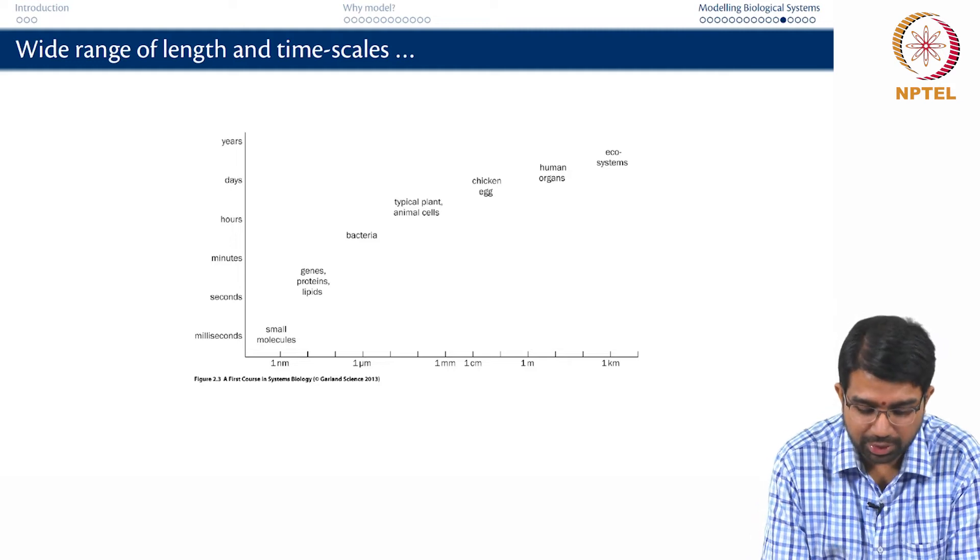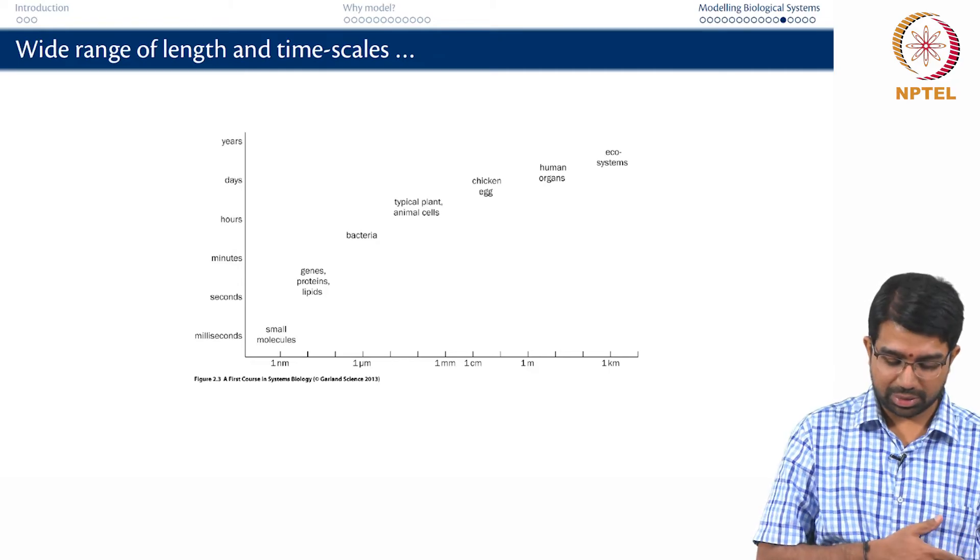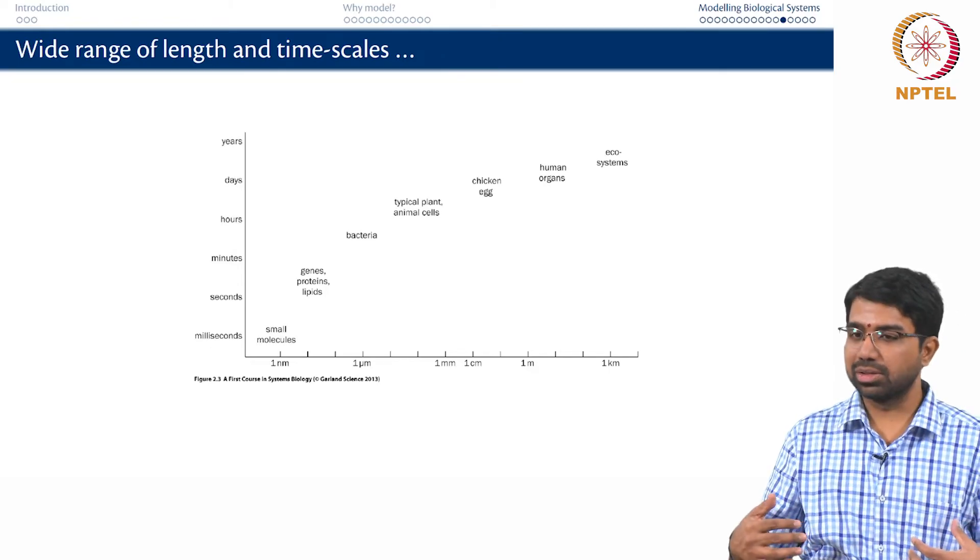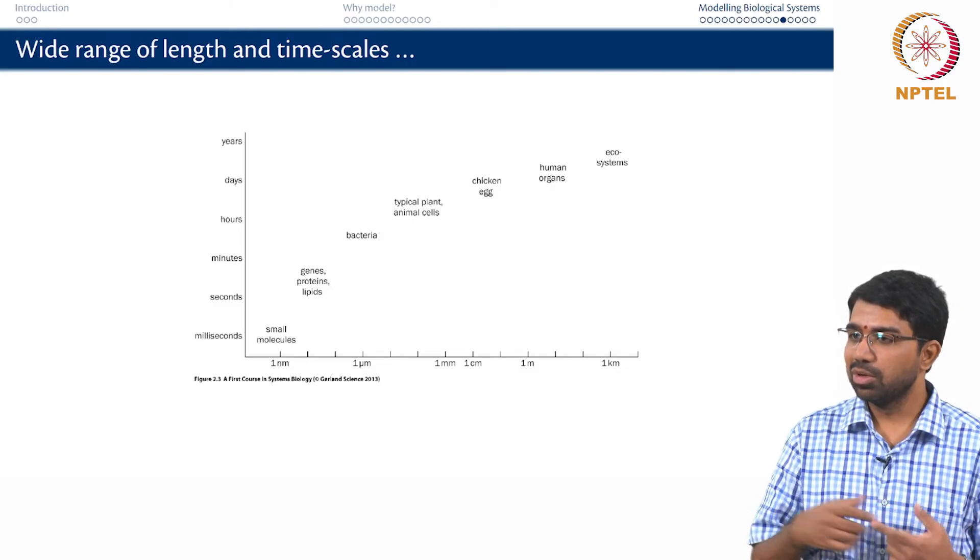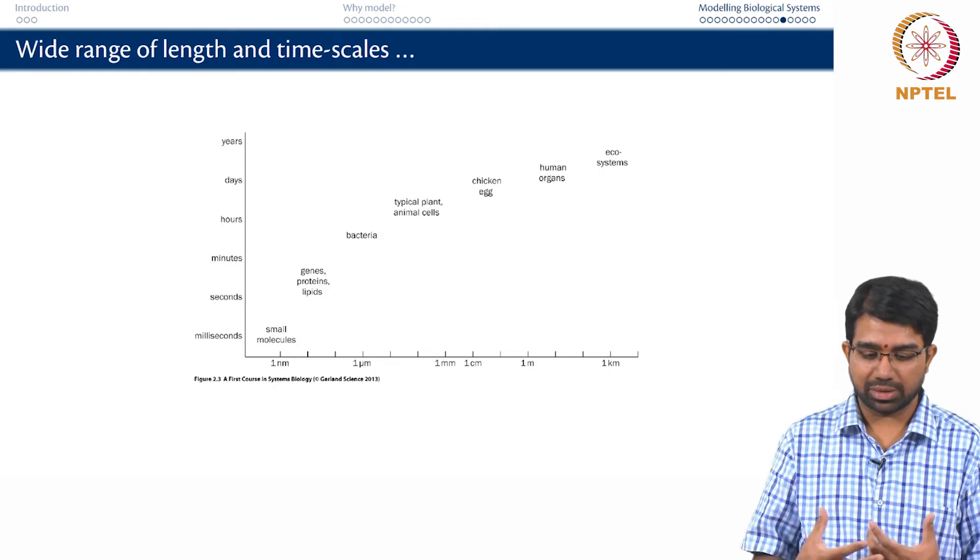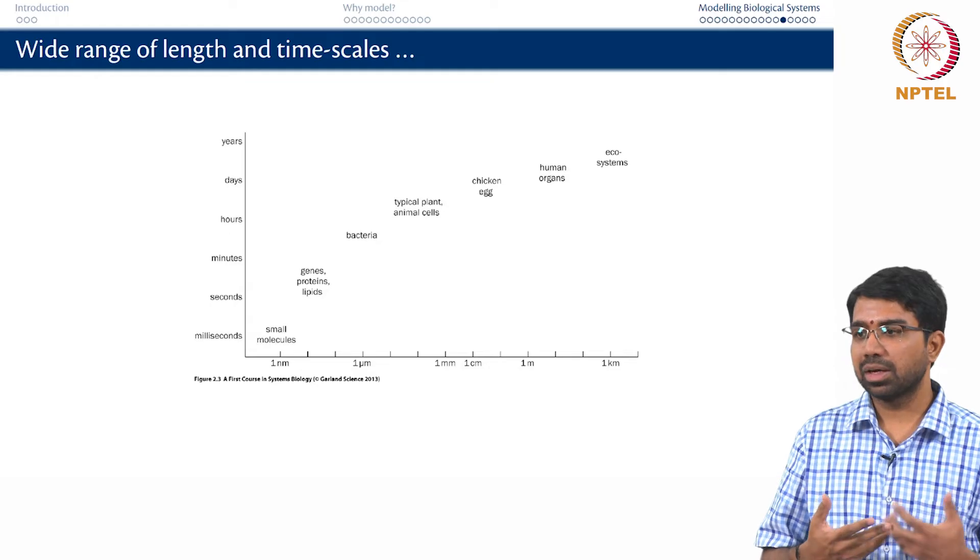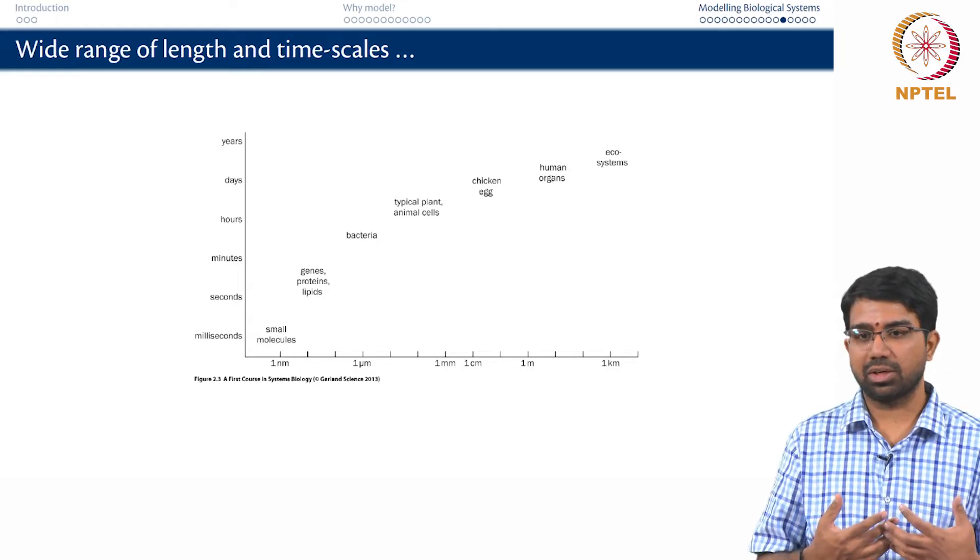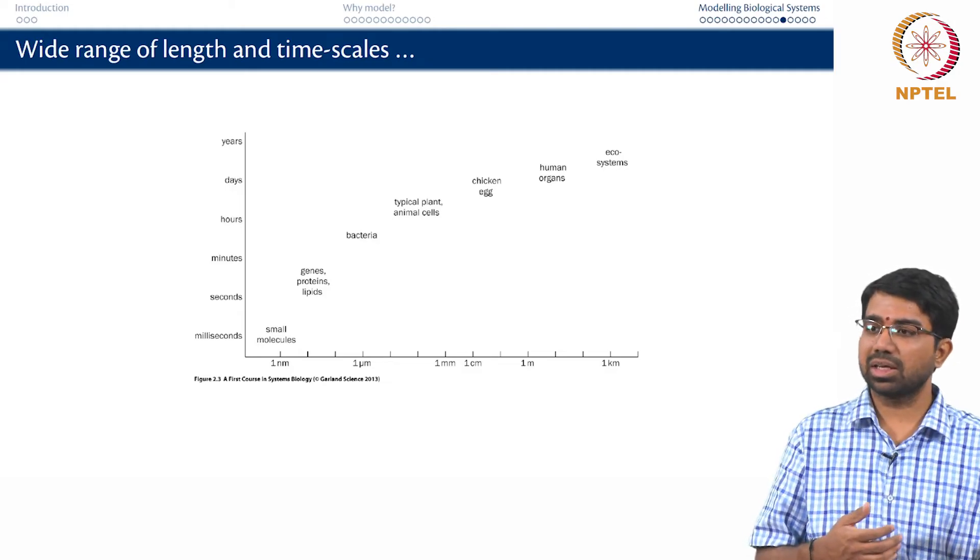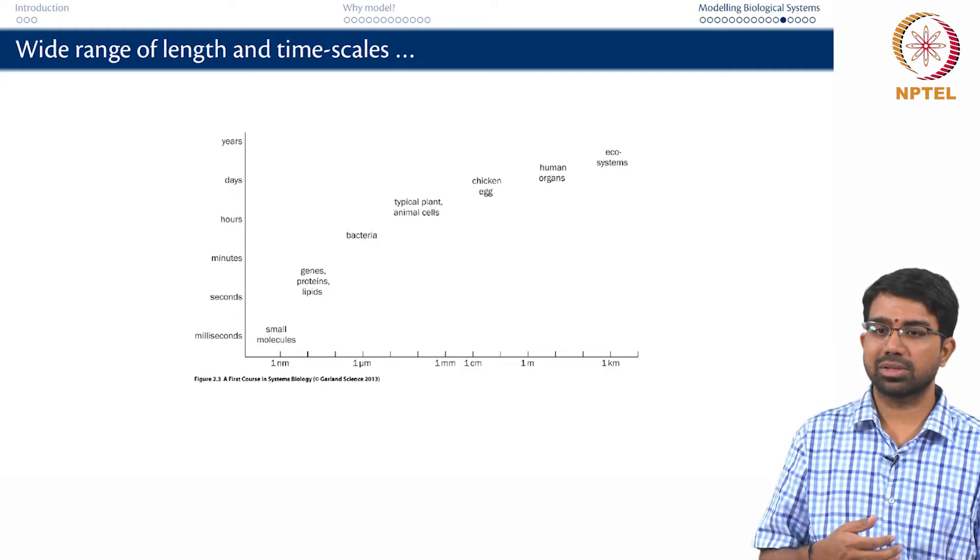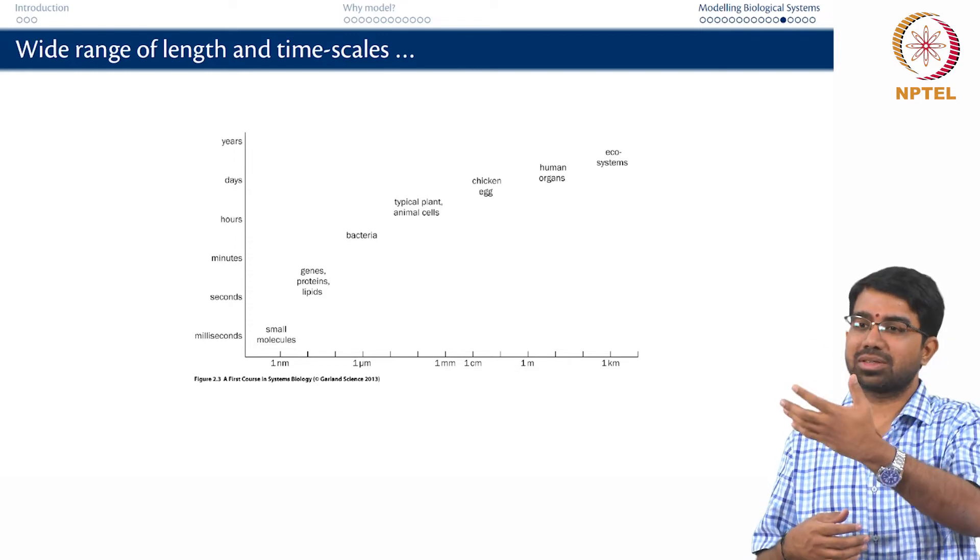You have on the length axis, you have small molecules which are like in the nanometer time scale. But then you also have organs or you know like neurons in your body can be a meter long and so on. You have different timescales within the same organism with different length scales. You also have different timescales, a very wide range of timescales that are in operation. Metabolism will happen over a few seconds, a few minutes. Signalling can happen over a few seconds, microseconds and so on.